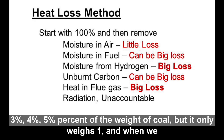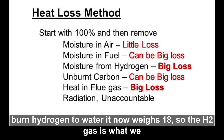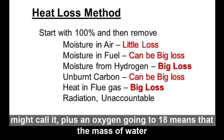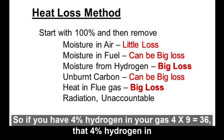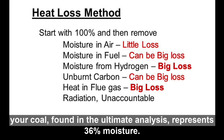Hydrogen is only about three to five percent of the weight of coal, but it only weighs one unit. When we burn hydrogen to water, the product weighs 18. So H2 plus oxygen going to water means the mass of water generated from burning a kilogram of hydrogen is nine times the mass of the hydrogen. If you have four percent hydrogen in your coal — found in the ultimate analysis — that represents 36 percent moisture equivalent from combustion.